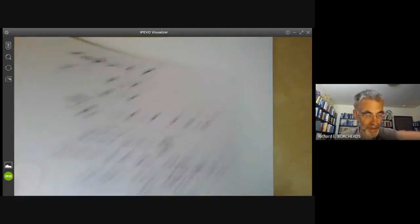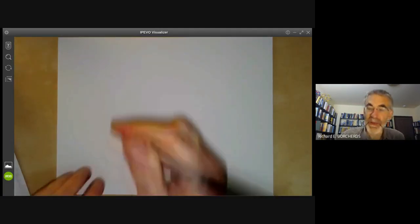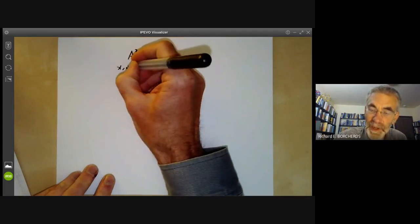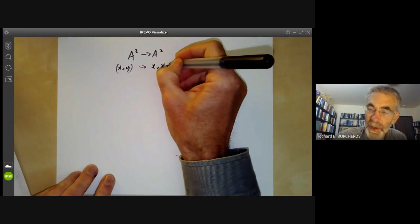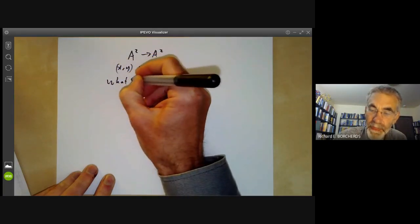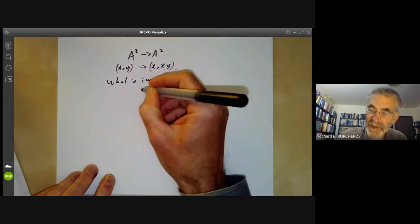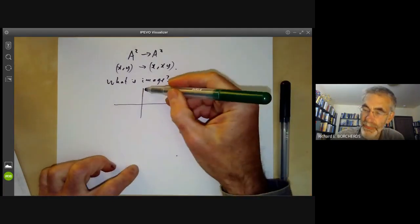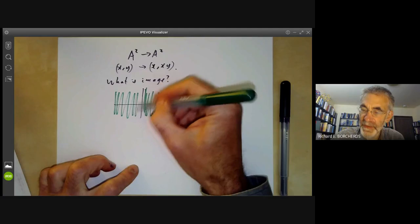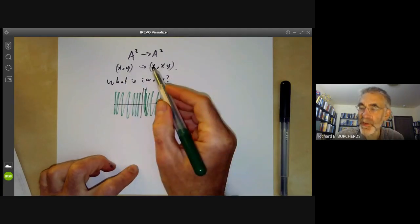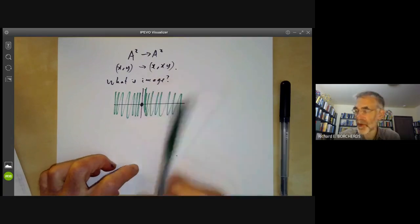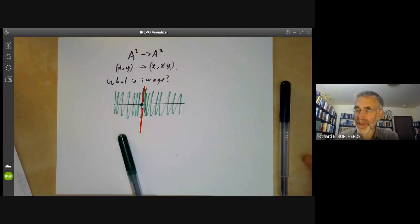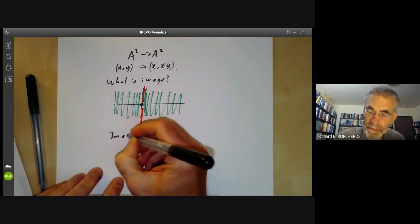Here's one more example involving morphisms of the affine plane. We have an endomorphism of the affine plane to itself which takes (x,y) to (x, xy), and we can ask what is the image? This isn't very difficult to work out. The image just consists of everything with x non-zero, so we get everything here and everything here. If x is zero, then this coordinate is zero but this coordinate also has to be zero, so we also get the origin but we don't get the rest of the y-axis.